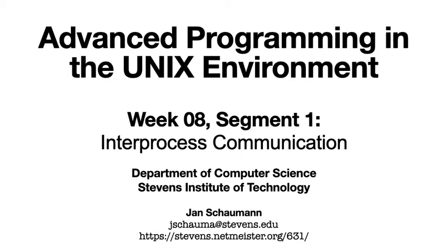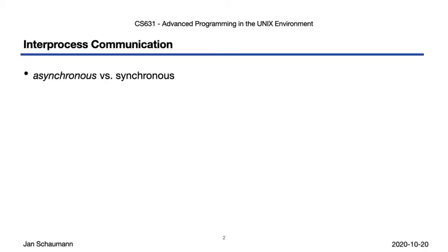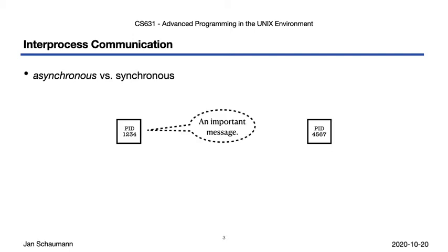Let's look at what forms of IPC we will consider. There's a difference between asynchronous and synchronous inter-process communication. During asynchronous IPC, the communication takes place without coordination, as we've seen with signals. Asynchronous communication also allows for a process to deliver a message and for a second process to consume it at a later point — a process sends a message, time elapses, and then the recipient receives the message without any feedback or coordination with the sending process.